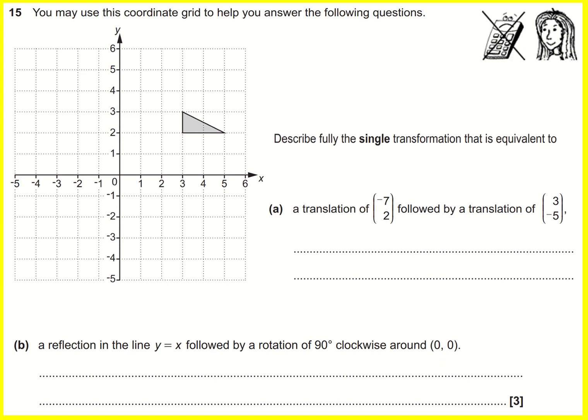So let's use the grid. I think it's possible to do A without the grid if you understand the idea of translations, but let's just go for it. So if I want to do a translation, minus seven, two...